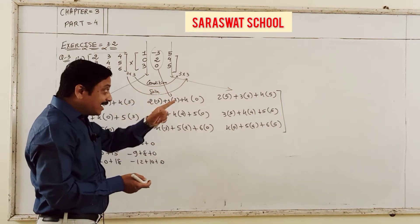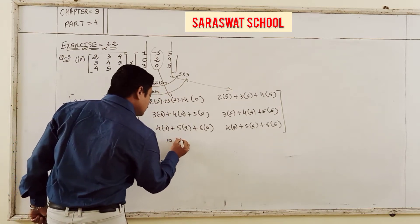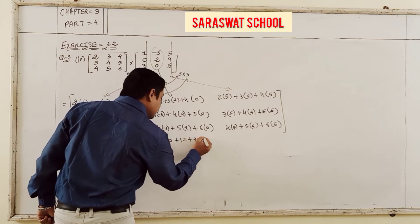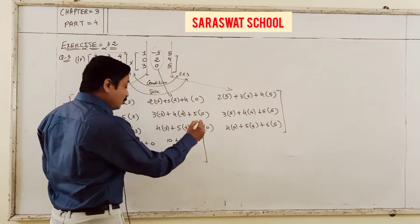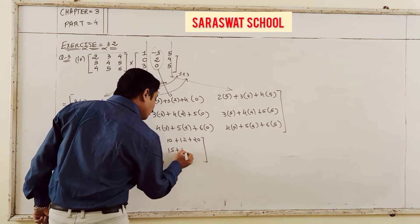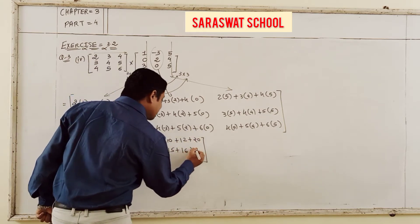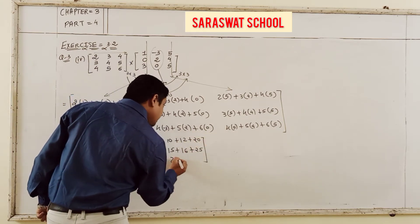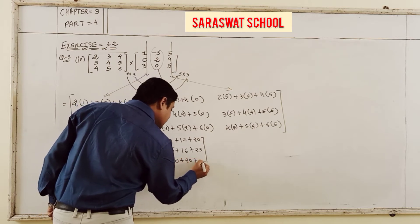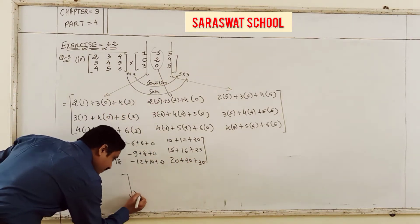This answer is: 2, 0, 12; 3, 0, 15; and last 4, 0, 6, 3 is 18. Next: minus 6, 6, 0; minus 9, 8, 0; and minus 12, 10, 0.